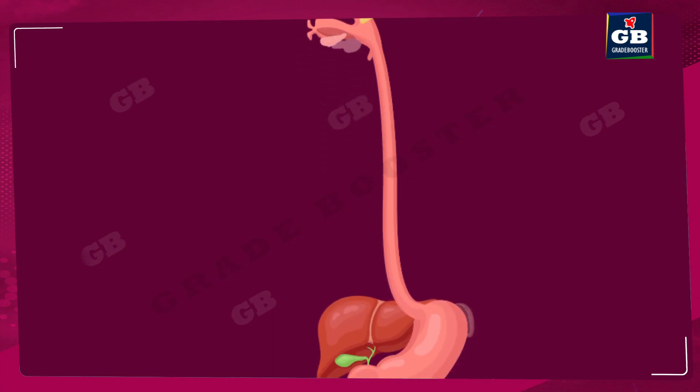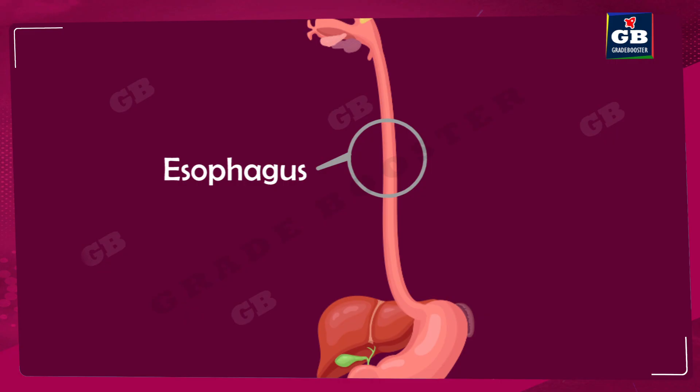The second part is the oesophagus. The oesophagus is a pipe-like organ that connects the mouth to the stomach — moo aur peet ko ye jodti hain.